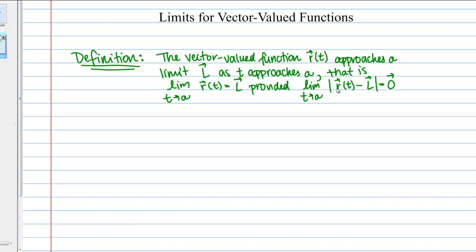then we can say that the limit as T goes to A of the vector-valued function R(T) equals L. This is really the same intuitive definition we used when we learned about taking limits of scalar functions, we're just using vectors here.